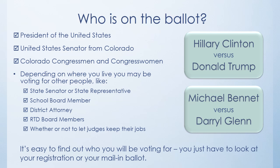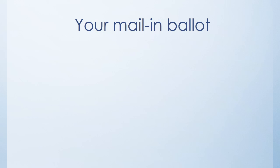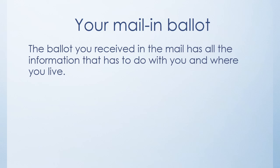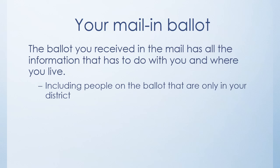It's easy to find out who you will be voting for — you just have to look at your registration or your mail-in ballot. Your mail-in ballot has all the information that has to do with you and where you live, including people on the ballot that are only in your district and issues that are special to where you live.